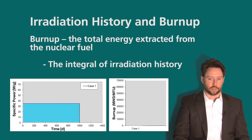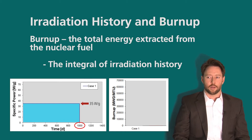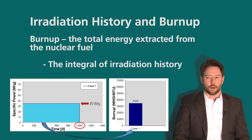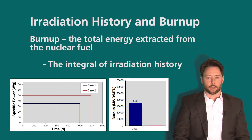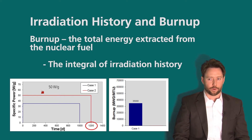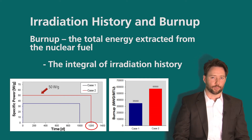Since that curve is just a simple rectangle, the burn-up is the length times the height: 1,000 days times 35 watts per gram, which equals 35,000 megawatt days per metric ton uranium — the standard unit of burn-up. For a second irradiation history of 1,200 days at 50 watts per gram, multiplying those together gives a burn-up of 60,000 megawatt days per metric ton uranium.